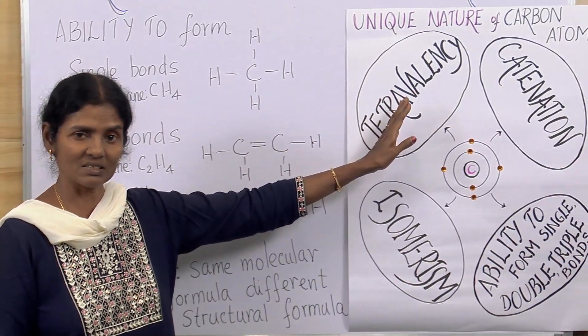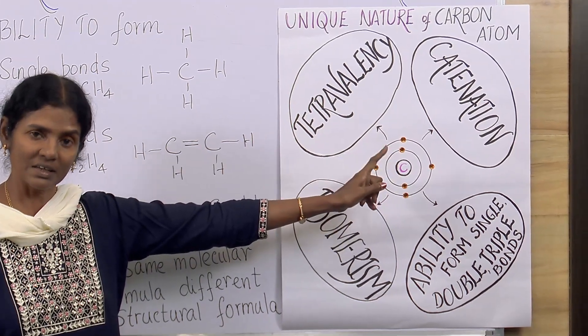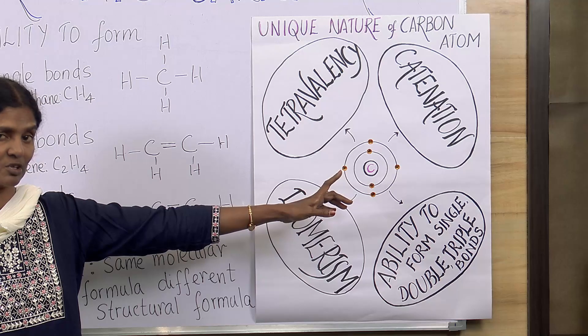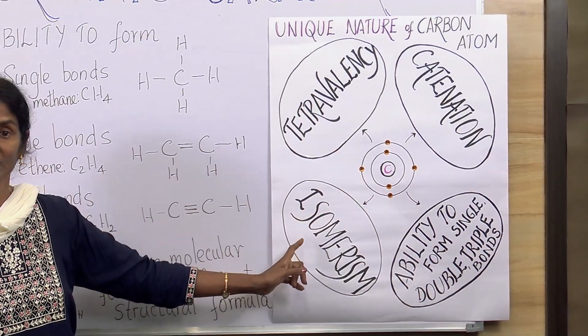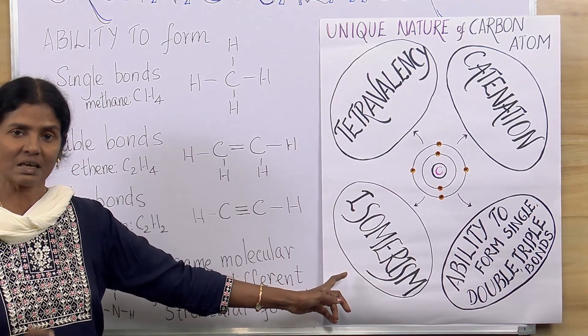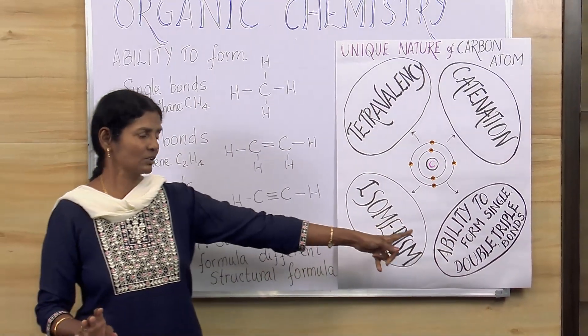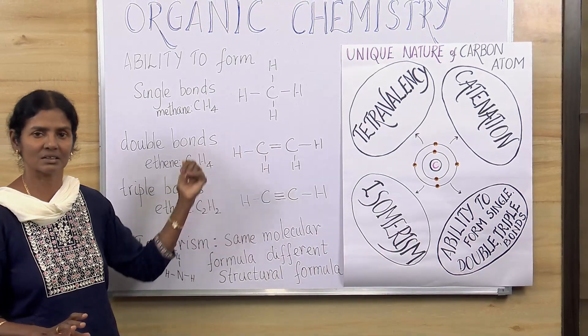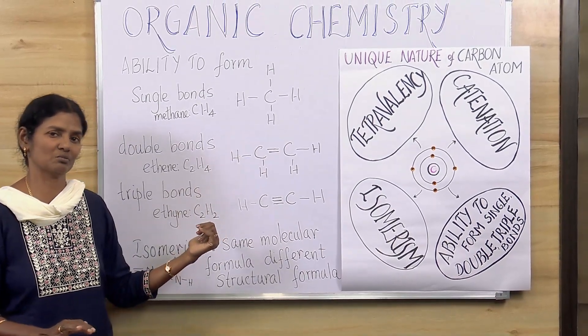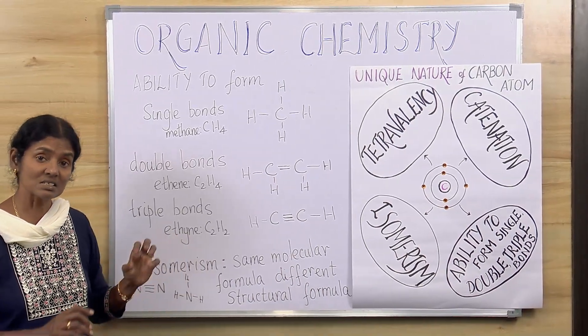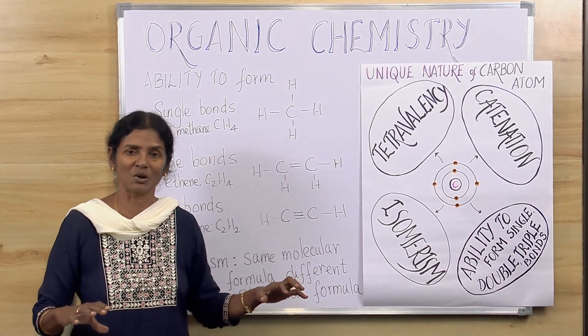First one is tetravalency. Second one, catenation forms giant molecules forming carbon to carbon linkages. Third one is isomerism. Same molecular formula but different structural formula. The last one is ability to form single, double and triple covalent bonds. This makes this carbon atom unique and this is the skeleton for all organic compounds.